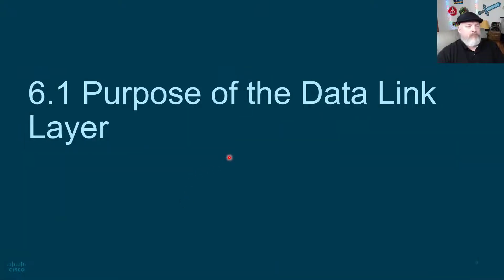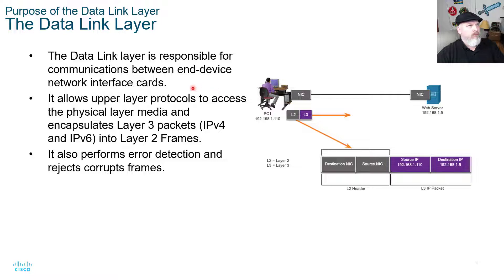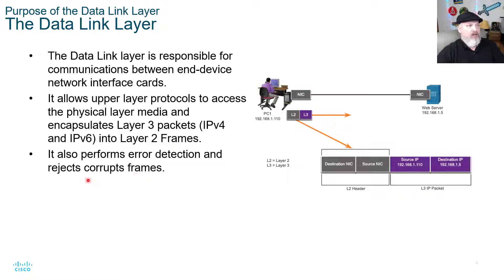The purpose of the data link layer is responsible for communications between end-device network interface cards. It allows upper layer protocols to access the physical media and encapsulates layer 3 packets — IPv4 and IPv6 — into layer 2 frames. It also performs error detection and rejects corrupt frames. The layer 2 header contains your destination NIC and source NIC MAC addresses, while layer 3 carries the IP packet and IPv4 address.